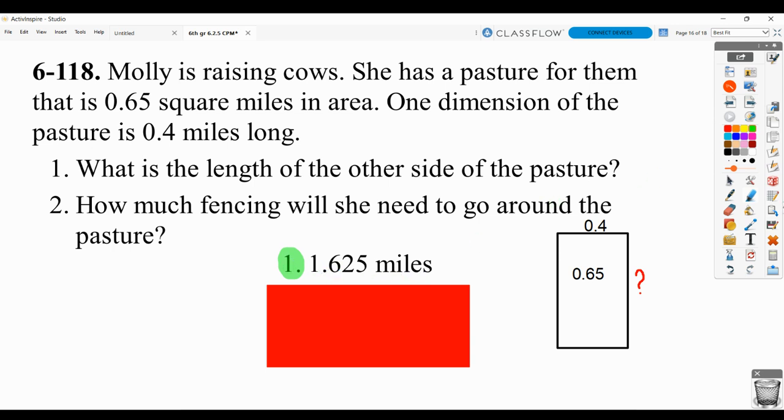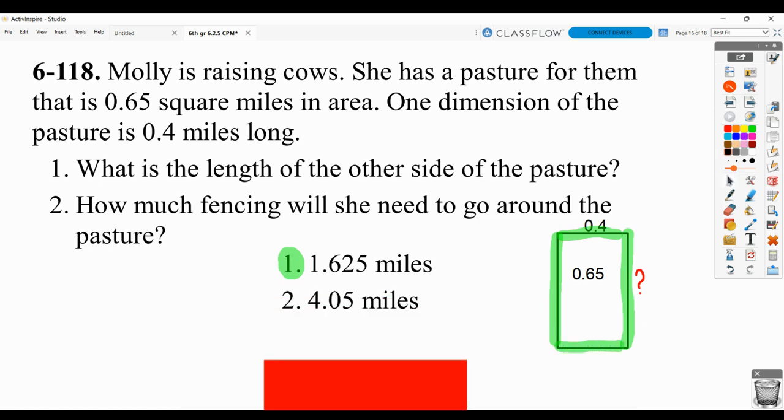And then how much fencing will you need to go around the pasture? Well, if this is 1.625, you're going to add that twice, plus the 0.4 twice. And again, I should see what you put into the calculator, and you're going to get an answer of 4.05 miles.